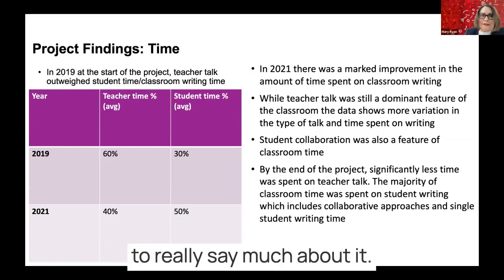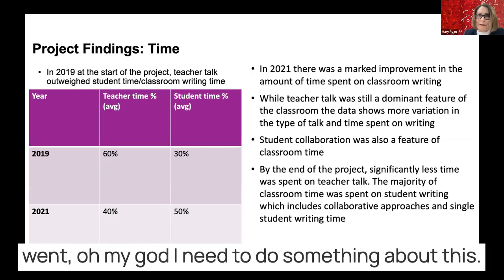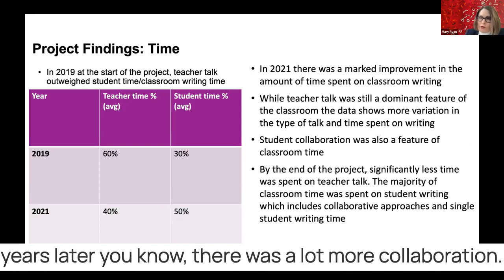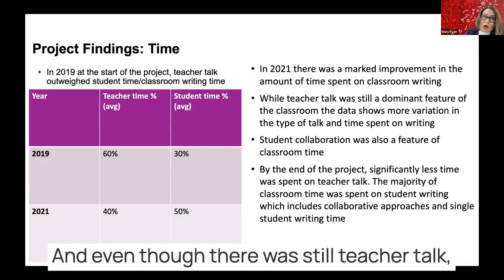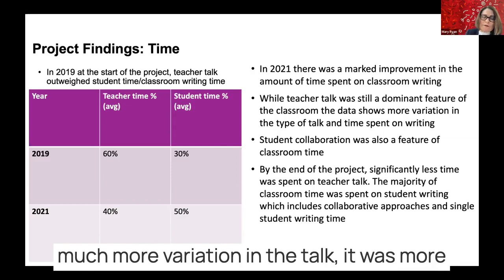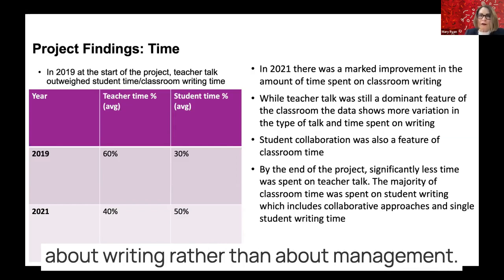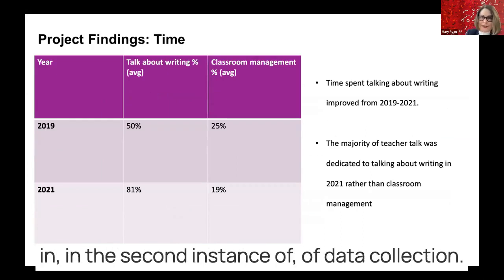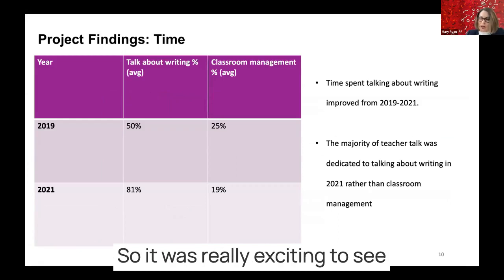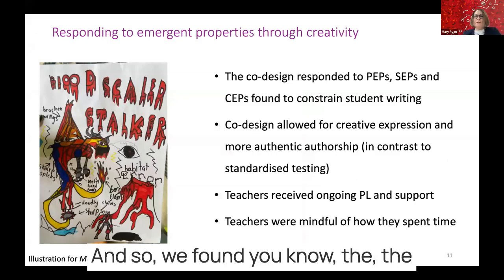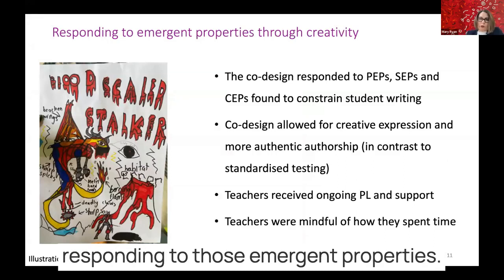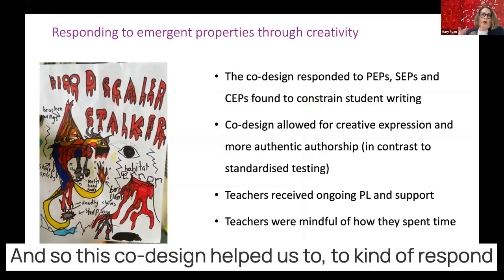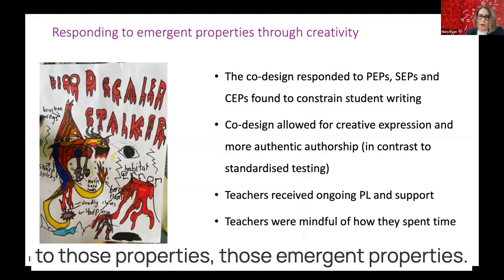We didn't have to say much about it — we could show them the data and they kind of went, 'Oh my god, I need to do something about this.' By 2021, two years later, there was a lot more collaboration, significantly less time spent on teacher talk, much more variation in the talk, with more about writing rather than management. The amount of talk about writing went from 50 to 80 percent in the second data collection. The co-design process was really helpful in responding to those emergent properties, and there was much more creative expression and authentic authorship happening.